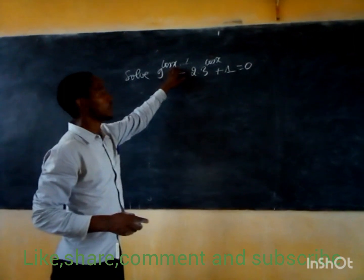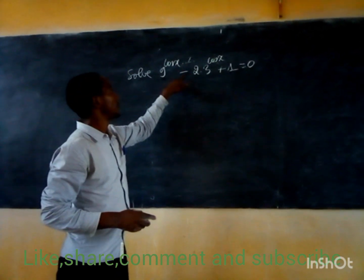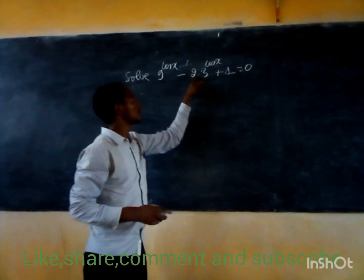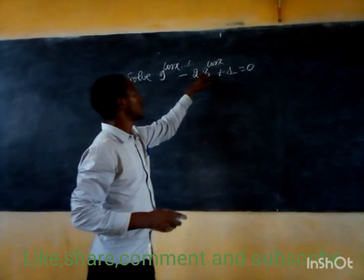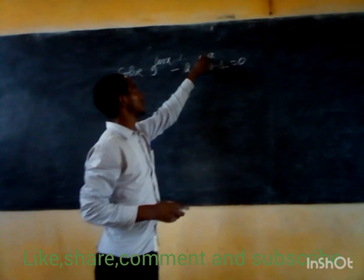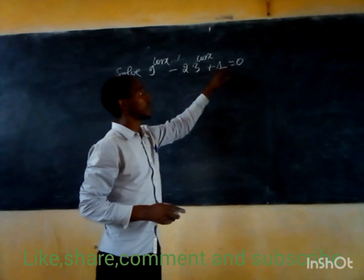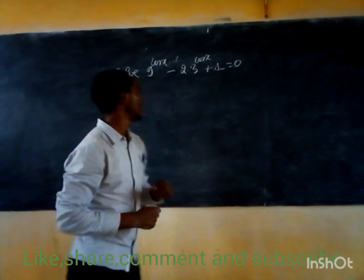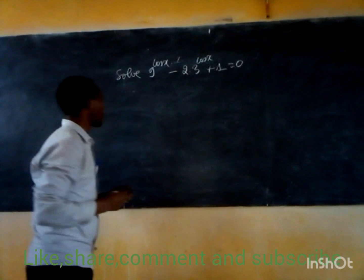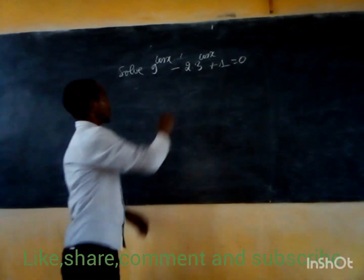9 to the power cosine of x minus 2, times 3 to the power cosine of x plus 1, is equal to 0. How to solve this equation? Answer.